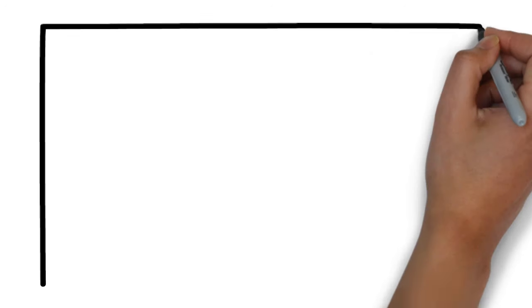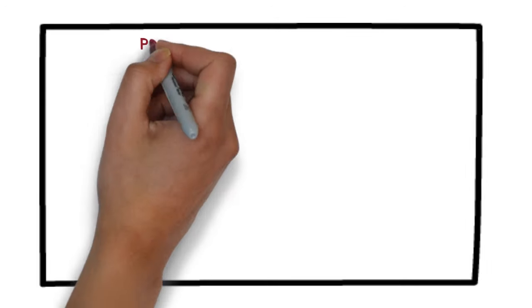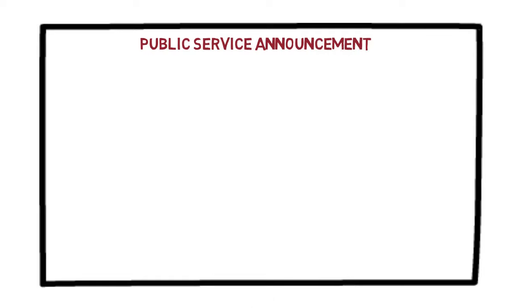First, let's draw a rectangular box of the size of the poster. In the top middle, write the title as Public Service Announcement. Now, below it, let's write a slogan. Stopping the spread starts with you.